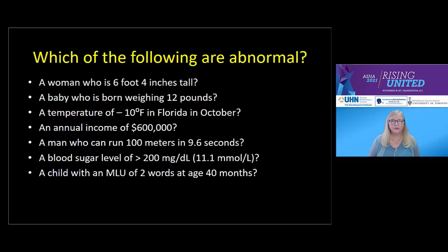I'd like to ask each of you to think about the situations listed on this slide and decide which of them is an example of something abnormal. We classify things as normal or abnormal all the time, including the examples of height, weight, running speed, temperature, blood sugar, and the number of words that a child puts together in utterances — all listed on this slide.